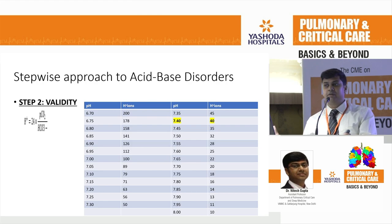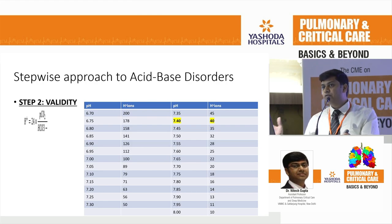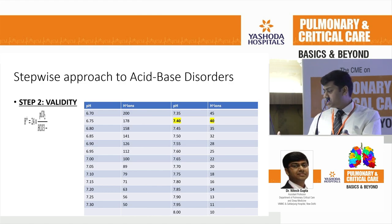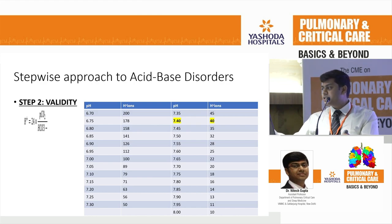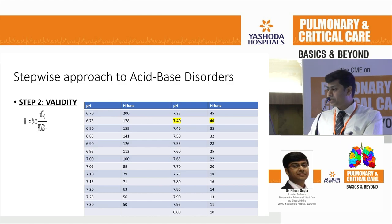Step two involves validity — whether the ABG you have is valid or not. If the ABG is not valid, there is no point in interpreting it. We use a chart for this; you can have it in your phone or pasted in your ICU. Whenever you get an ABG, you check the pH and H+ calculated with the pCO2 and bicarbonate. If they are within range, your ABG is valid, then you move to step three.